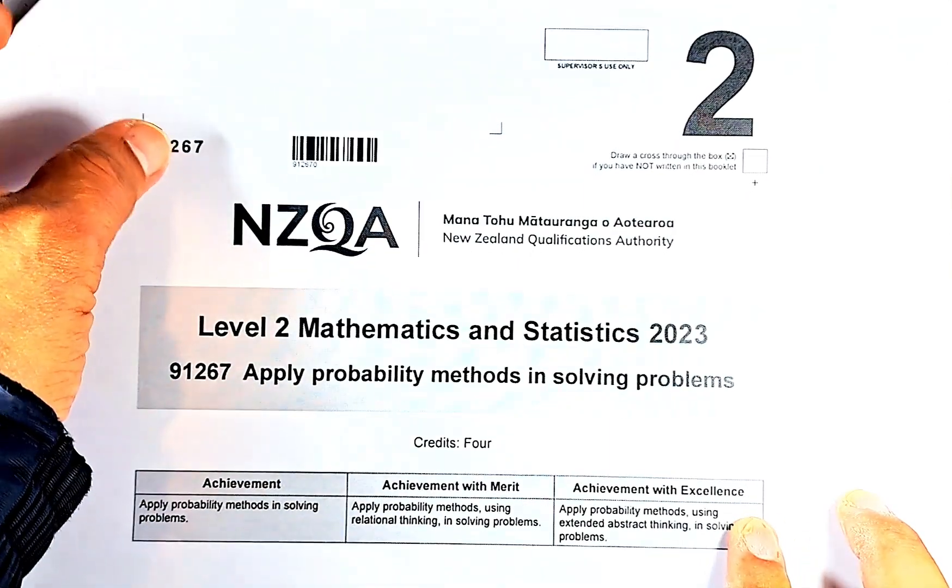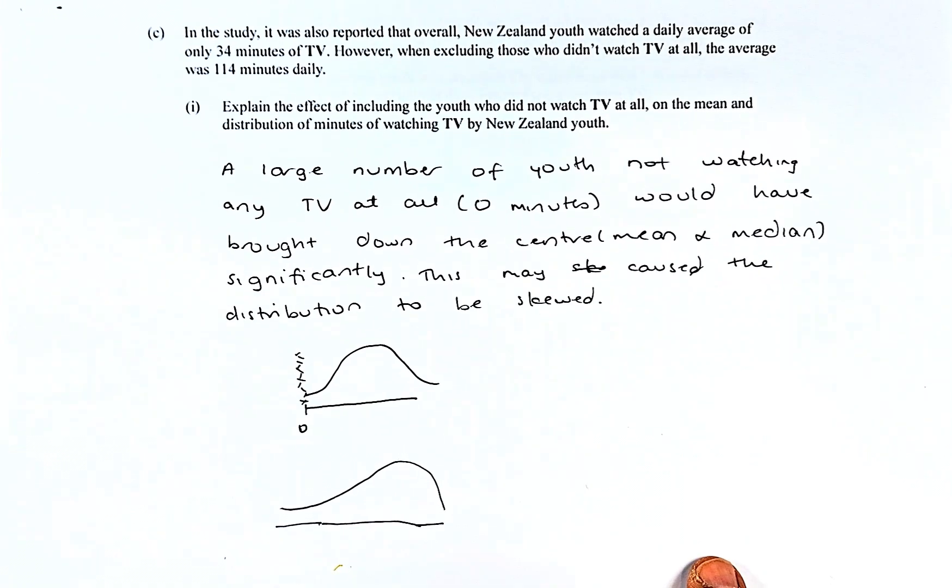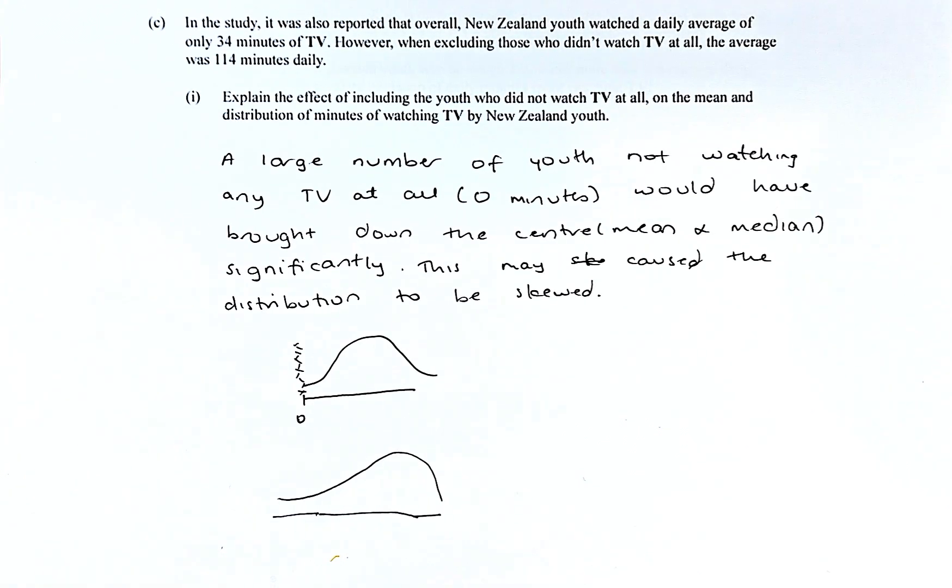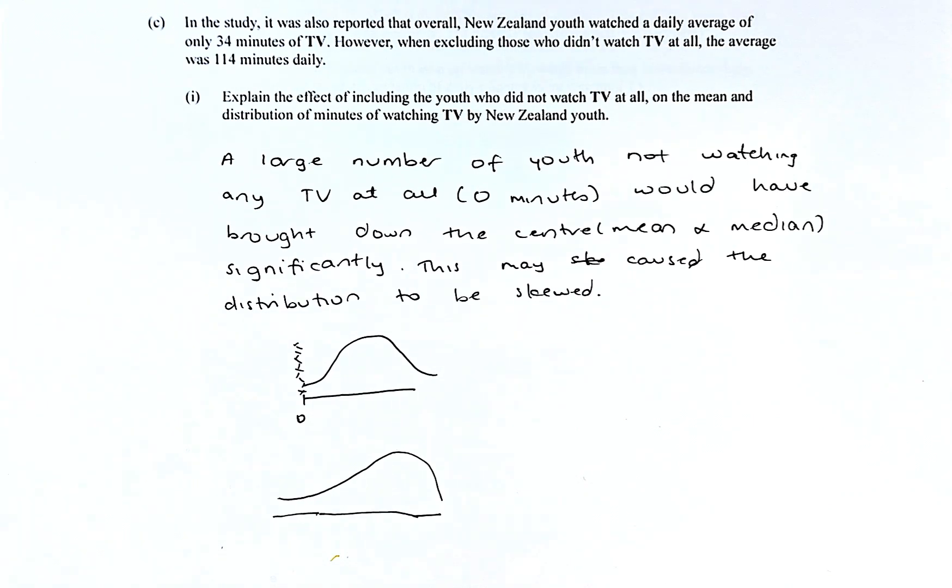We shall remove the cover sheet. The question is: in the study, it was reported that overall, New Zealand youth watched a daily average of only 34 minutes of TV. However, when including those who didn't watch TV at all, the average was 114 minutes daily. Explain the effect of including the youth who did not watch TV at all on the mean distribution of minutes of watching TV by New Zealand youth.